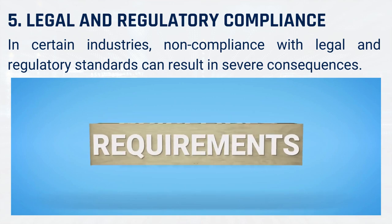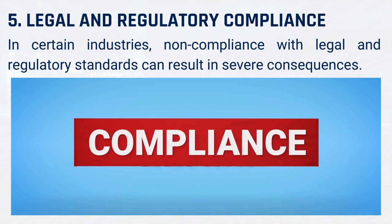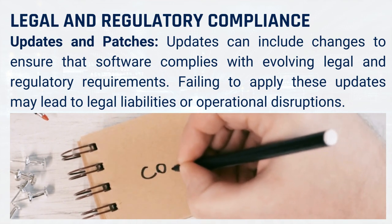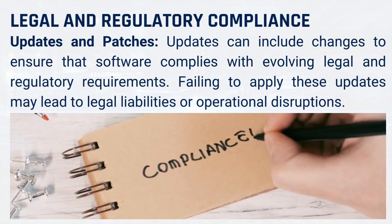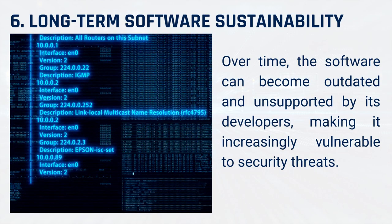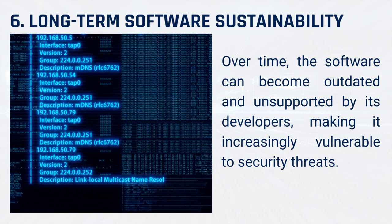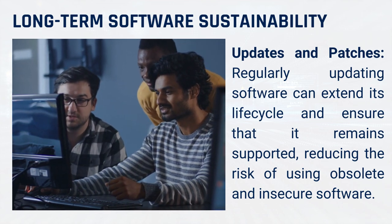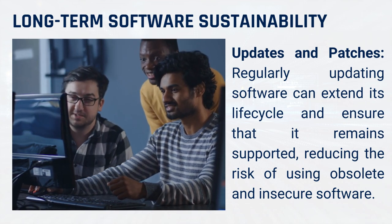5. Legal and regulatory compliance. In certain industries, non-compliance with legal and regulatory standards can result in severe consequences. Updates can include changes to ensure that software complies with evolving legal and regulatory requirements. Failing to apply these updates may lead to legal liabilities or operational disruptions. 6. Long-term software sustainability. Over time, software can become outdated and unsupported by its developers, making it increasingly vulnerable to security threats. Regularly updating software can extend its lifecycle and ensure that it remains supported, reducing the risk of using obsolete and insecure software.